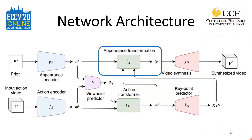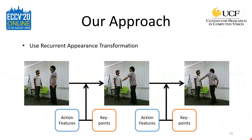The appearance transformation network is a recurrent network based on a convolutional gated recurrent unit, or GRU, that is used to transform the appearance features of the prior according to the action in the input video. The convolutional GRU takes the appearance features, transformed action features, and the predicted action key points as input. At each time step, the action features and key points from that time step are used to transform the appearance features from the previous time step to the current one. By the end of the process, we have appearance features from different time steps that are combined together to give the appearance encoding a temporal dimension. This transformed appearance encoding is then used to generate the final network output.